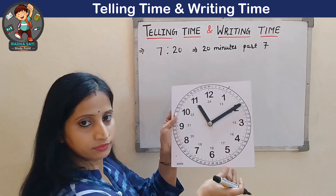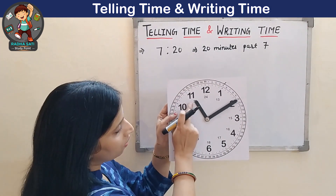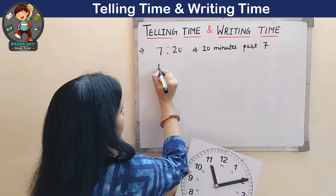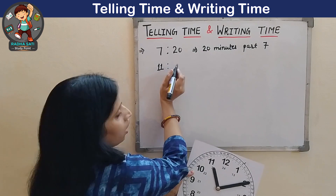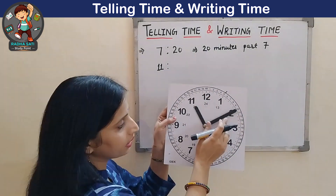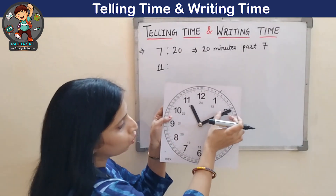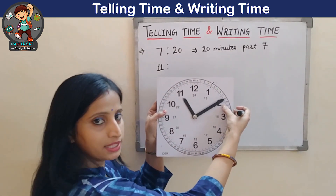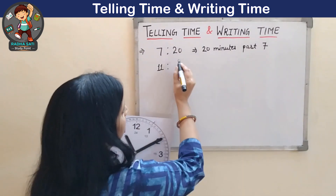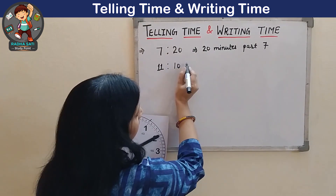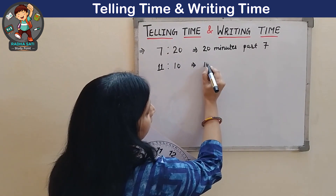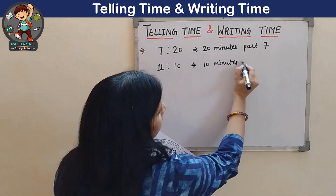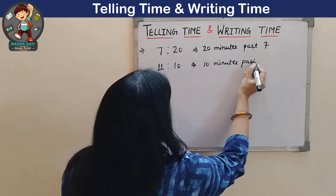What's the time now? This time the hour hand is at 11 — write 11 first. Then put the dots. Now read the minute hand: it is at 2. 2 means: 5, 10 — so that is 10 minutes. The time is 11:10. Or in words: 10 minutes past 11.